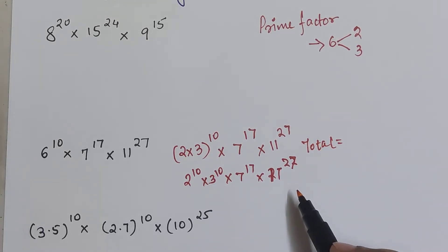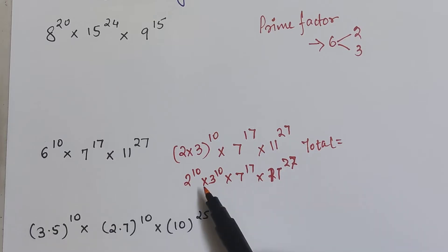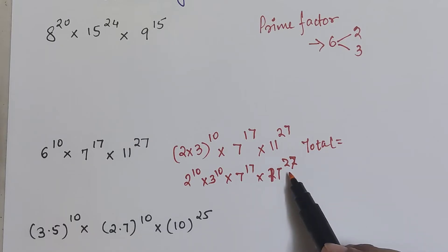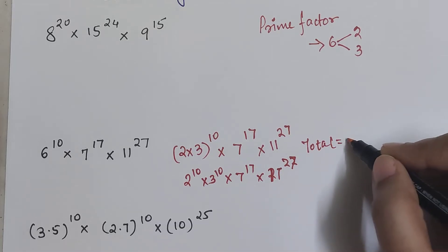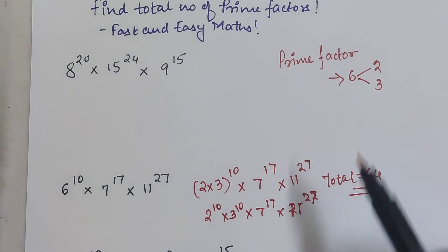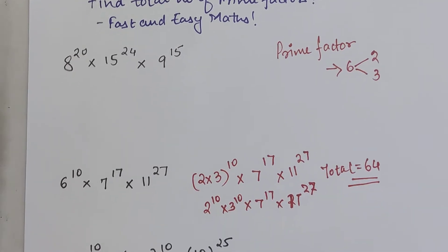So in this case we do 10 plus 10 is 20, 20 plus 17 is 37, 37 plus 27 gets you, so 57 plus 7 gets you 64. So these are your total number of prime factors for this particular question.